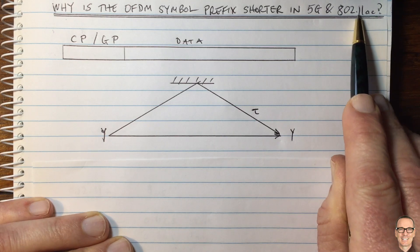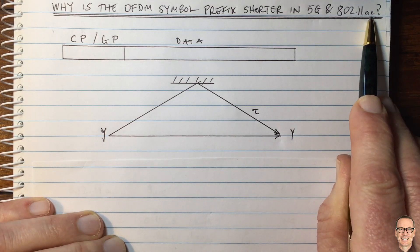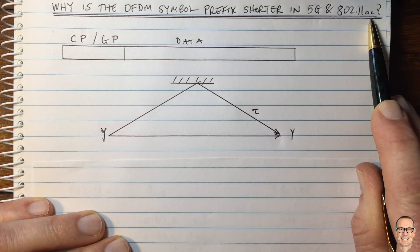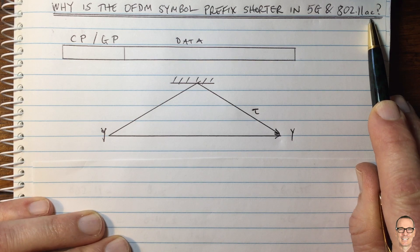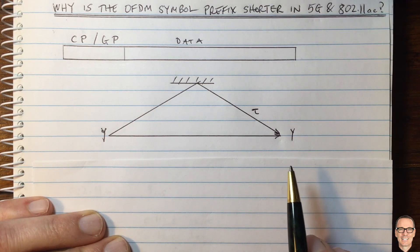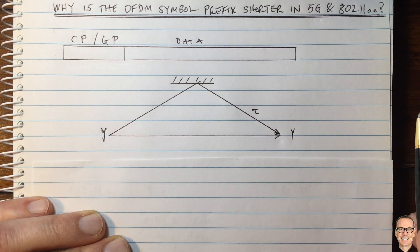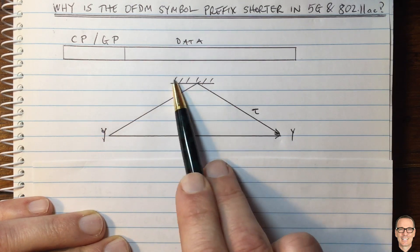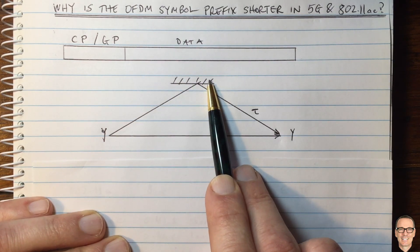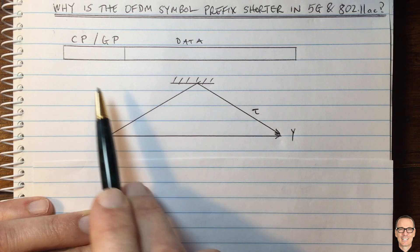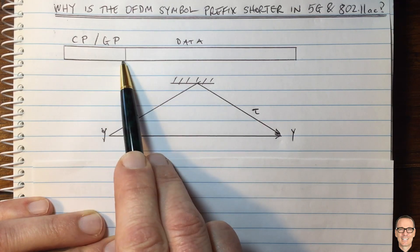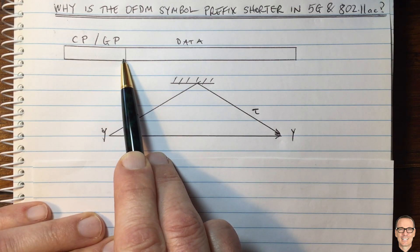Similarly, the 802.11ac Wi-Fi standard is designed to have dense access points for high capacity systems. This has less transmit power, which means less effect from scatterers that are far away. So both of these reasons support having a shorter prefix period.